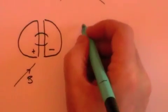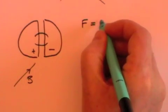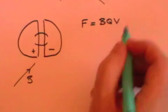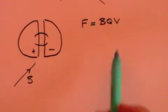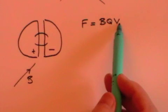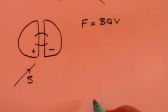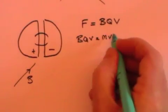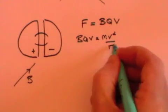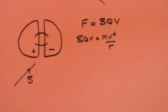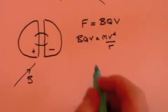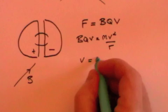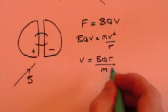The force on a charged particle moving in a magnetic field is given by F equals BQV, where B is the magnetic field, Q is the charge on the particle, and V is its velocity. Since this particle moves in a circle, that force must be providing the centripetal force. So BQV equals mv squared over r, where r is the radius of the orbit. We can rearrange this to give the velocity as BQR over m.